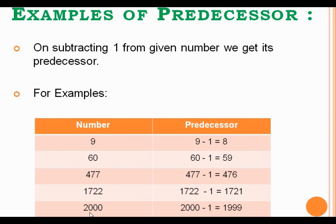Same way, if we want to find out the predecessor of 2000, we have to subtract 1 from 2000, so we will get the answer 1999. So, 1999 will be the predecessor of 2000.